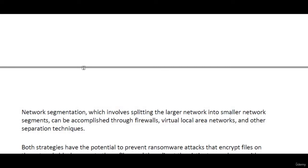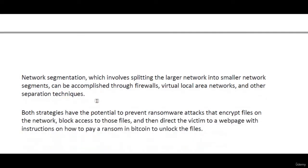In network segmentation, we split the big network into small parts, and at every small network you configure firewalls and VLANs to filter out all that traffic, which will be very helpful. What will happen is that on a very small network, if a ransomware attack occurs, it is not going to affect the other parts of the network.